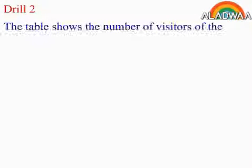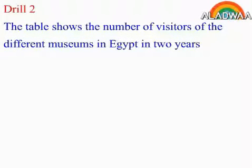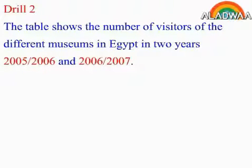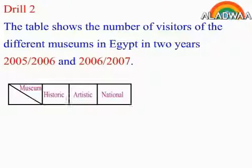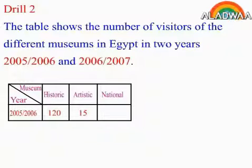Drill 2. The table shows the number of visitors of the different museums in Egypt in two years: 2005–2006 and 2006–2007. Museums: historic, artistic, national. For year 2005–2006: 120 visitors to historic museums, 15 visitors to artistic museums, 10 visitors to national museums.